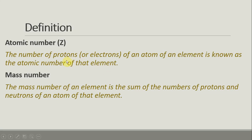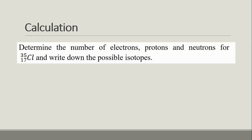The atomic number gives the count of protons and electrons. The neutron count is not included in the atomic number but contributes to the mass number. The mass number equals the atomic number plus the number of neutrons. To find the number of neutrons: subtract the atomic number from the mass number.